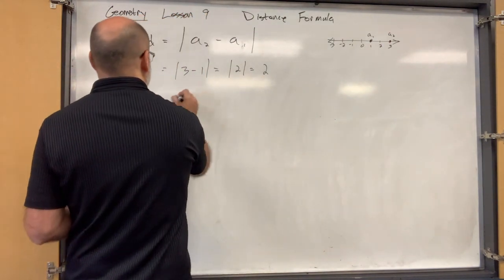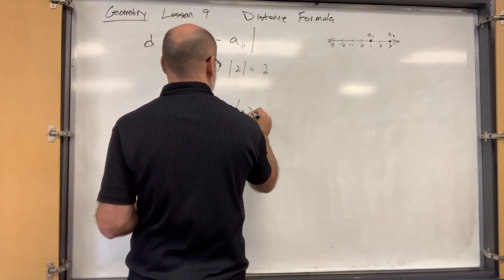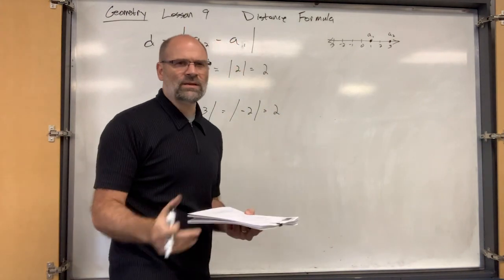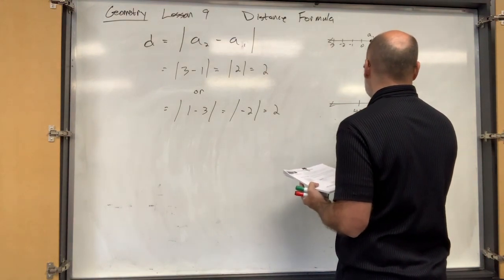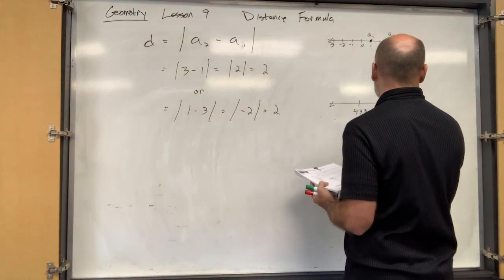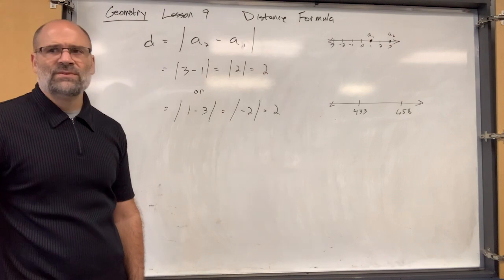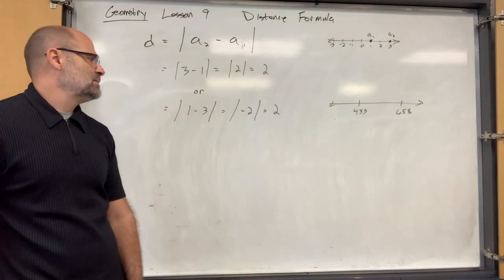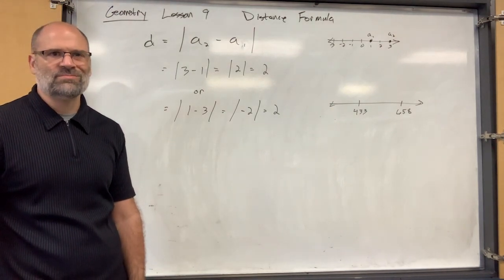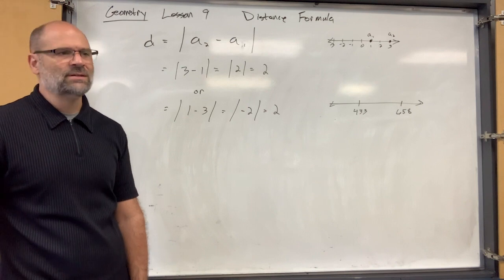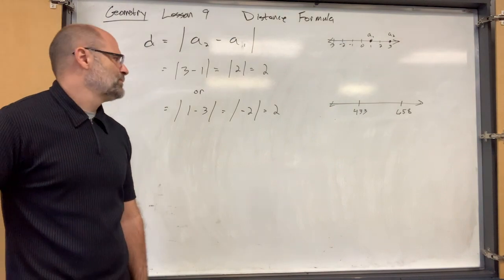It doesn't matter if it's a₂ minus a₁ or a₁ minus a₂ because when you take the absolute value it all goes away. The absolute value of 1 minus 3 is the absolute value of negative 2, which is also 2. Just ignore the negative sign if you get one. It's liberating — you don't have to put the subtraction problem in the right order.